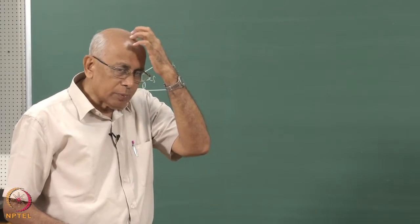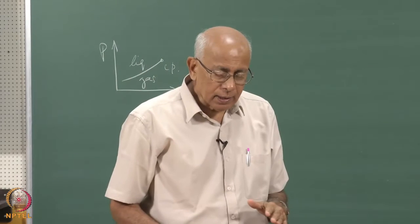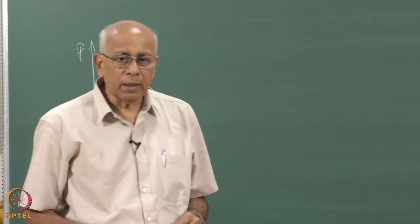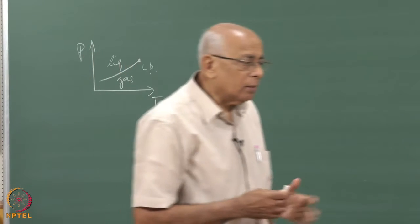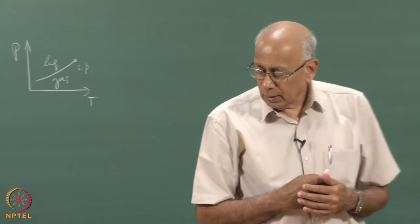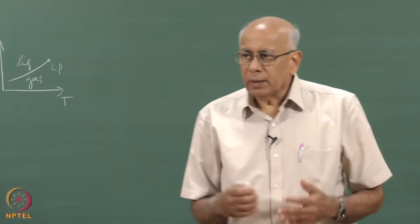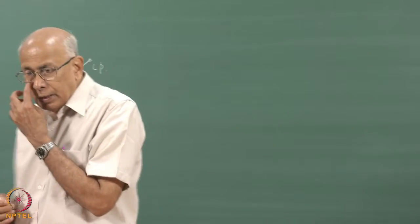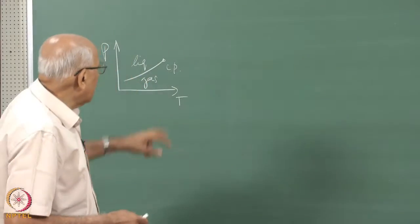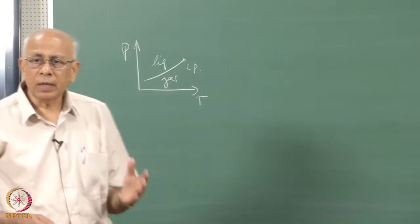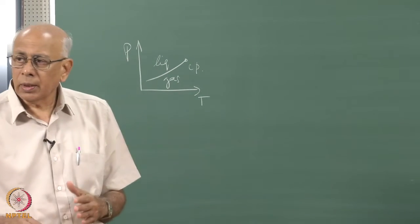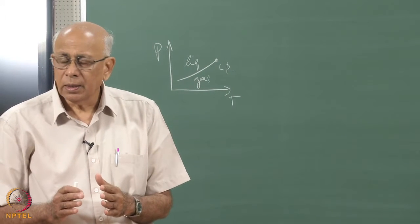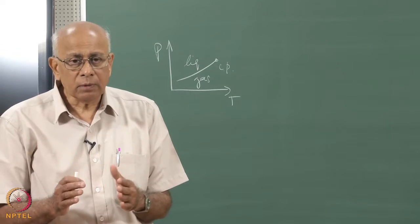It took a long time for people to appreciate this. The problem was really solved in the 1970s starting with the advent of what is called the renormalisation group, pioneered by Wilson above all. The difficulty itself was recognised long before this, before 1970. This is the point where fluctuations become significant, so much so that thermodynamics itself fails.